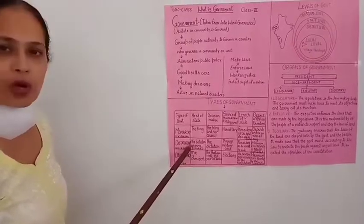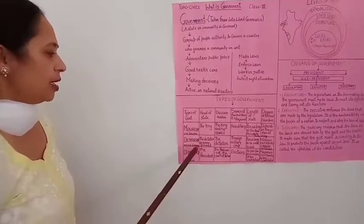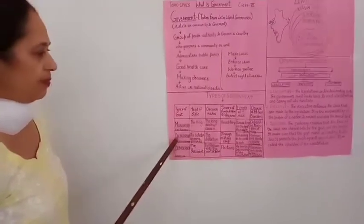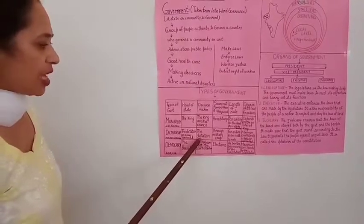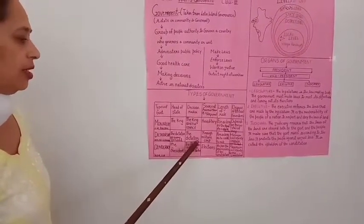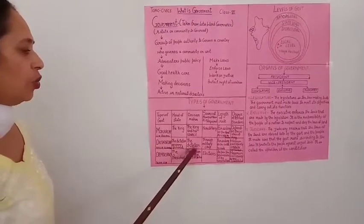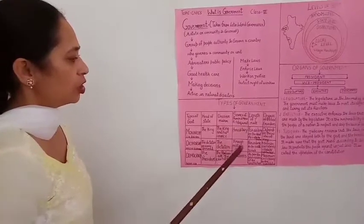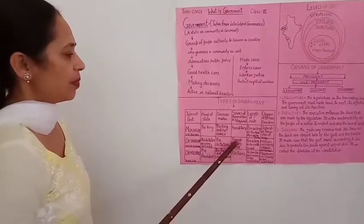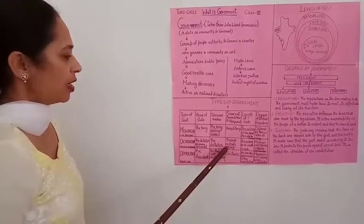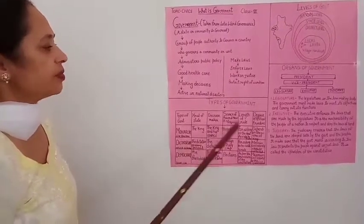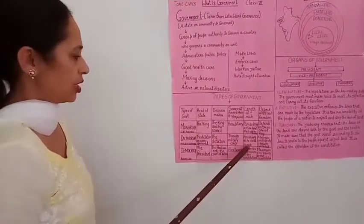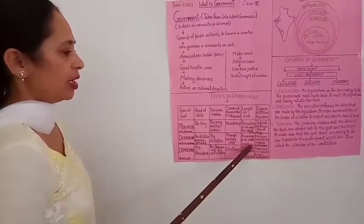Next type of government is dictatorship. Dictatorship — Hitler was a dictator in Germany. Head of state: the dictator or an army general is the head of the state. Decision maker: the dictator — फैसले लेने का काम सिर्फ एक dictator ही करता है. In dictatorship, लोगों की wishes को priority नहीं दी जाती. Source of power: how it is acquired — through military coup, जैसे कि पाकिस्तान में हम देखते हैं. Length of rule — for as long as he is able to; एक dictator की कोई time limit या period fixed नहीं है.